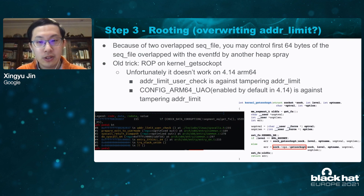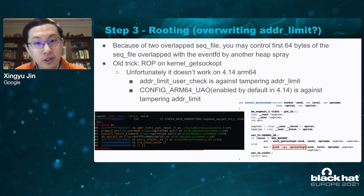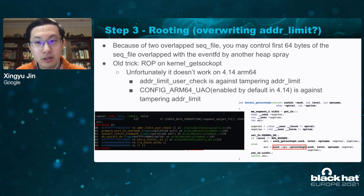The challenge is to corrupt a sequence operation to control the kernel instruction pointer and perform an escalation of privilege. We need to spray a sequence file again to ask the kernel to use the corrupted sequence operation correctly.